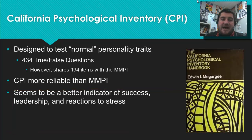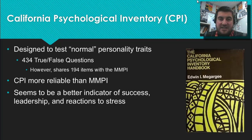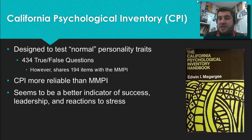The CPI, or California Psychological Inventory, is considered more reliable than the MMPI and is designed to test normal personality traits. It shares 194 items with the MMPI but consists of 434 true-or-false questions. It appears to be a better indicator of success, leadership, and reactions to stress.